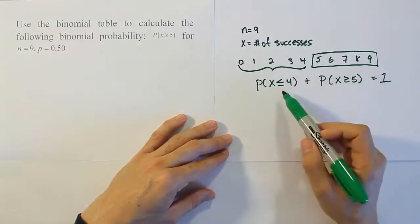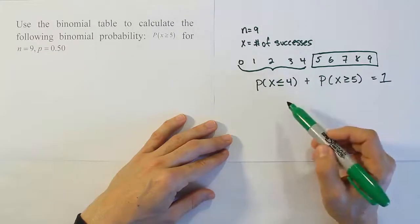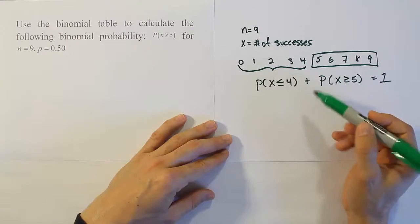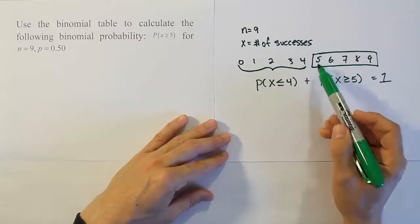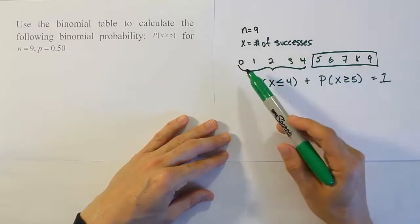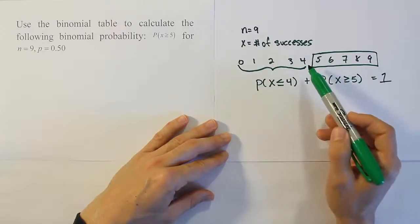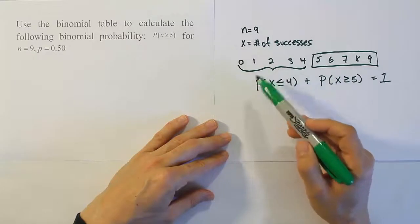The reason why this relationship is important is because my table is not intelligent. It doesn't know what you want from it. It just answers one question only. If I go to the table and look up 5, it would give me from 5 to 0 all the probability. It would give me the probability of 5 plus 4 plus 3, 2, 1, 0.